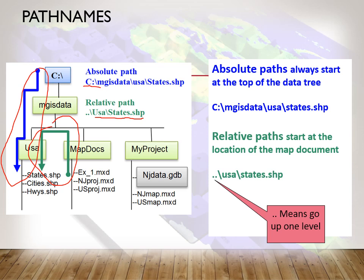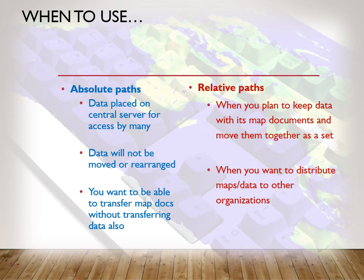Absolute paths go all the way back to the drive letter. A relative path just uses the folder that the data is in — essentially it goes one level up. Absolute paths are okay if you never move anything — if you don't move your map and don't move the data, absolute paths work. But if you have data that you're going to move or send to another organization, you want to use relative paths. I automatically make sure that my map documents use relative paths. I don't know why ArcGIS defaults to absolute paths — I think that's actually annoying — but I go in and make sure it's all set to relative paths.